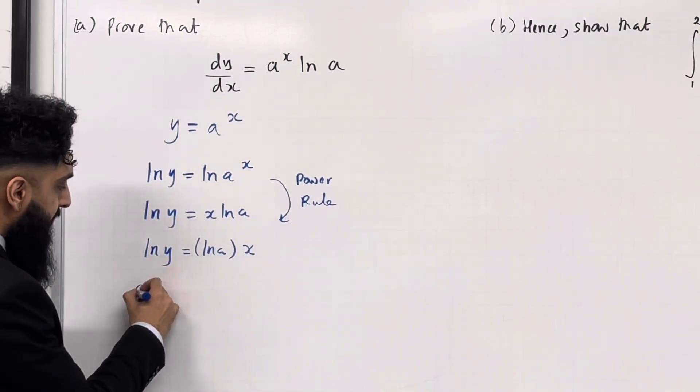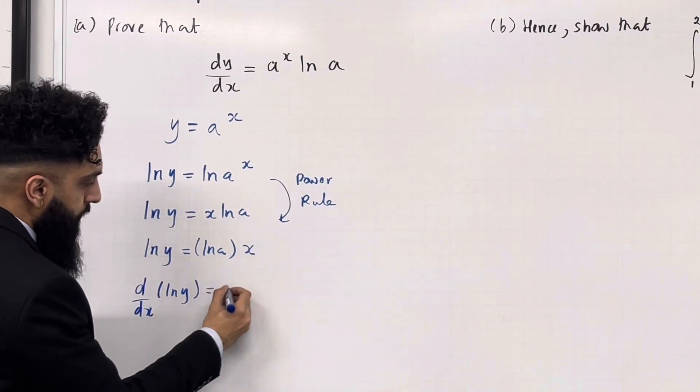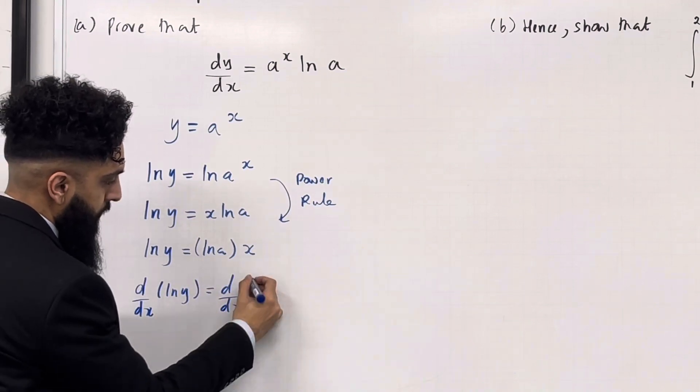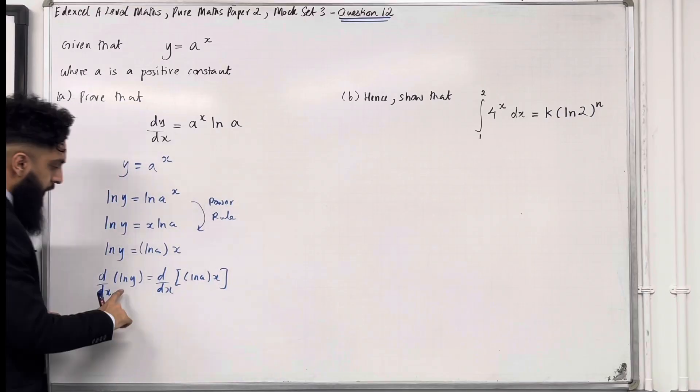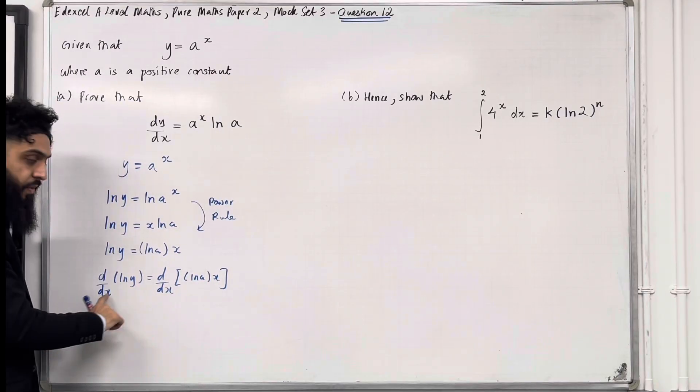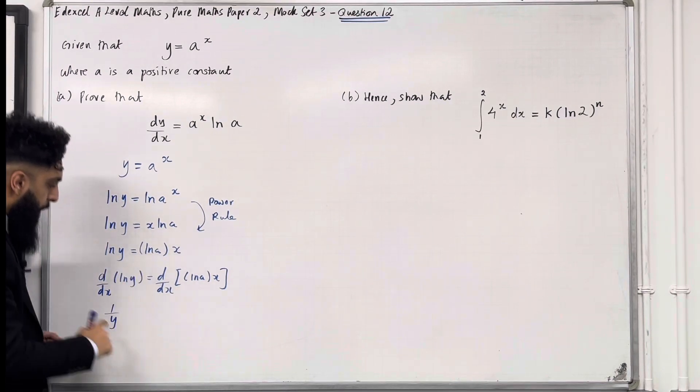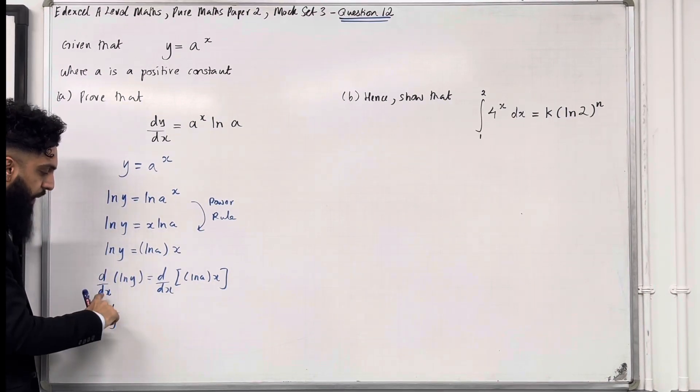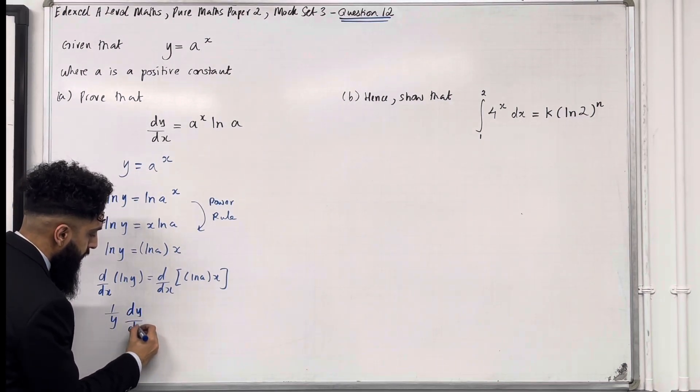I can apply d over dx on both sides. So if I differentiate ln y with respect to x, I get 1 over y. And because I'm differentiating with respect to x, I must stick in dy over dx.